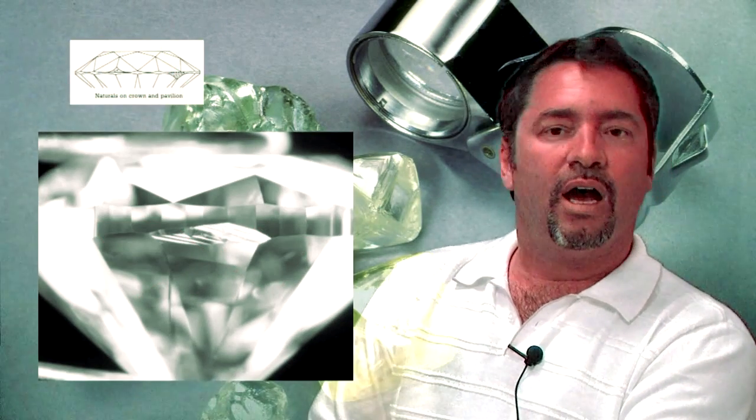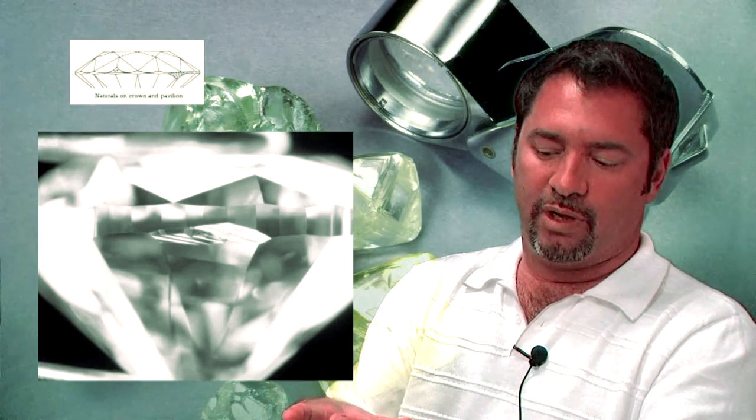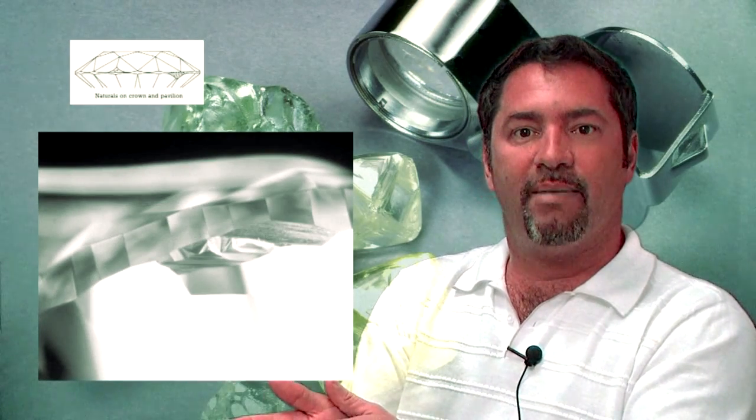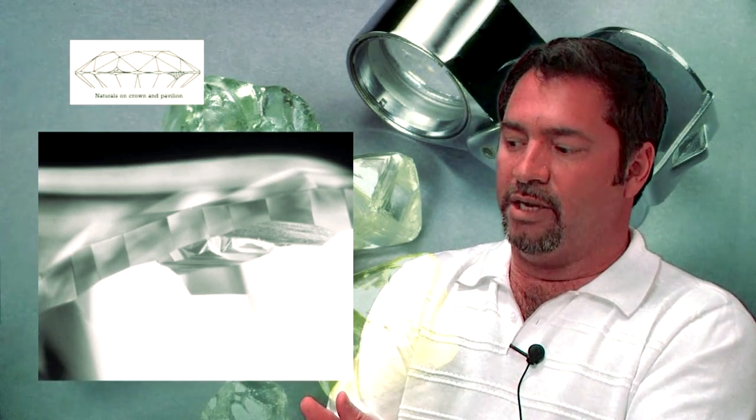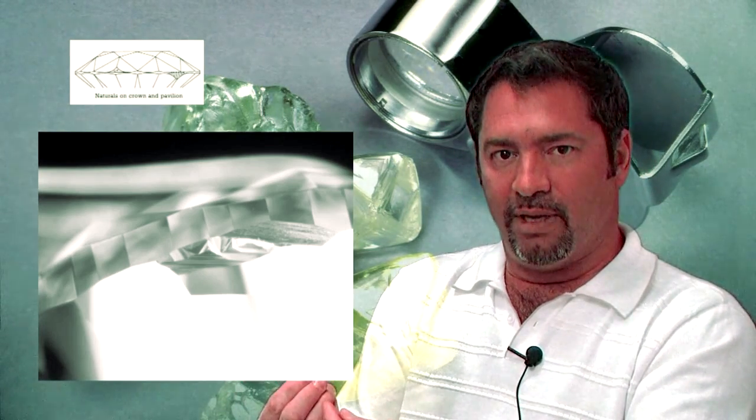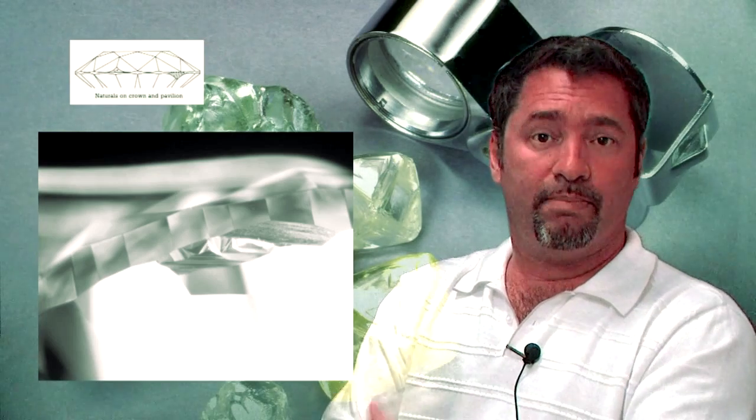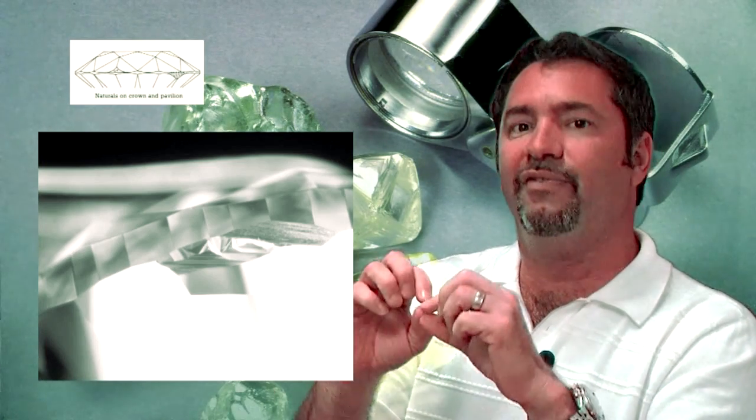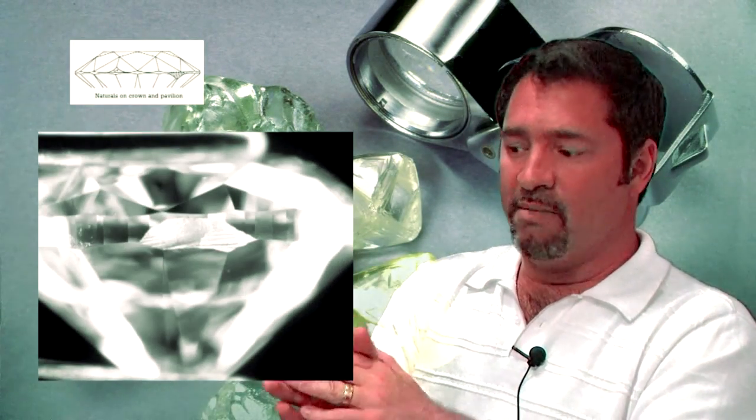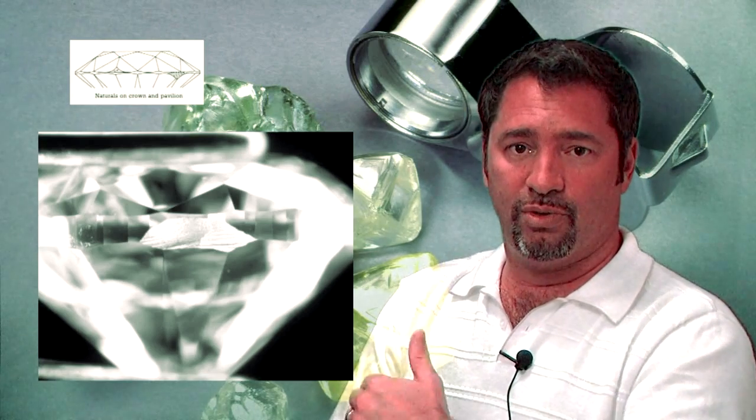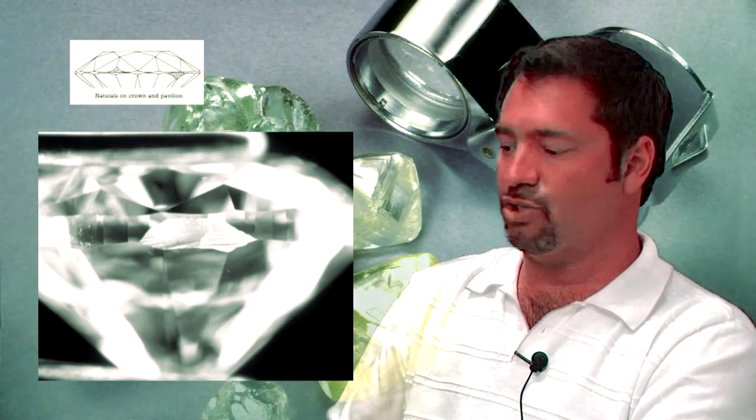Naturals on the crown and pavilion are another feature. A natural occurs when factories, trying to maintain as much original weight as possible, leave part of the original rough diamond on the finished product. It's called a natural because it's part of the natural crystal face. If the natural is confined to the girdle, that's not a problem. But when it extends onto the pavilion or crown, the diamond takes a hit in symmetry grade.